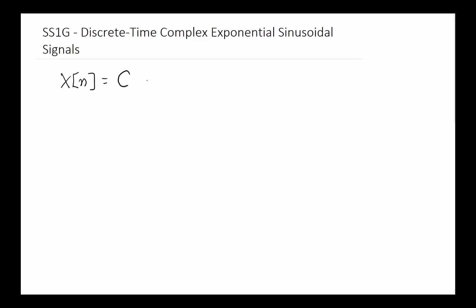In this video we're going to talk about discrete-time complex exponential sinusoidal signals as part of the signals and systems series of videos. This is very similar to continuous time with some slight differences. Let's start with the signal definition: X of n is the signal, and we typically write it as C times a to the power of n.